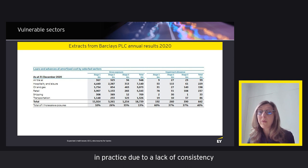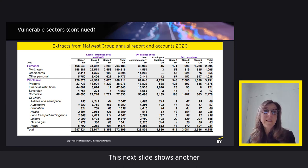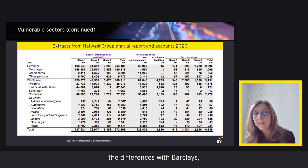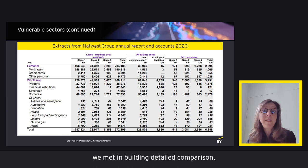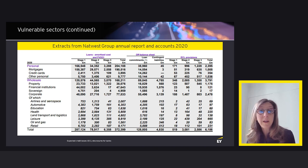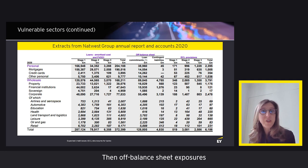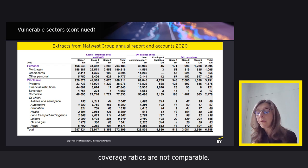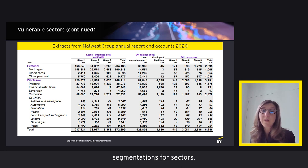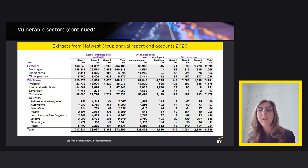Quantitative comparisons were challenging in practice due to lack of consistency. Another good example comes from NatWest, but it's interesting to note the differences with Barclays, which illustrate the difficulty in building detailed comparisons. For instance, the NatWest exposures include fair value through OCI, so the scope for on-balance sheet items differs. Off-balance sheet exposures are also shown, but there is a single amount for ECL allowance, so coverage ratios are not comparable. Banks also use different segmentations for sectors and it's often unclear what they have scoped.